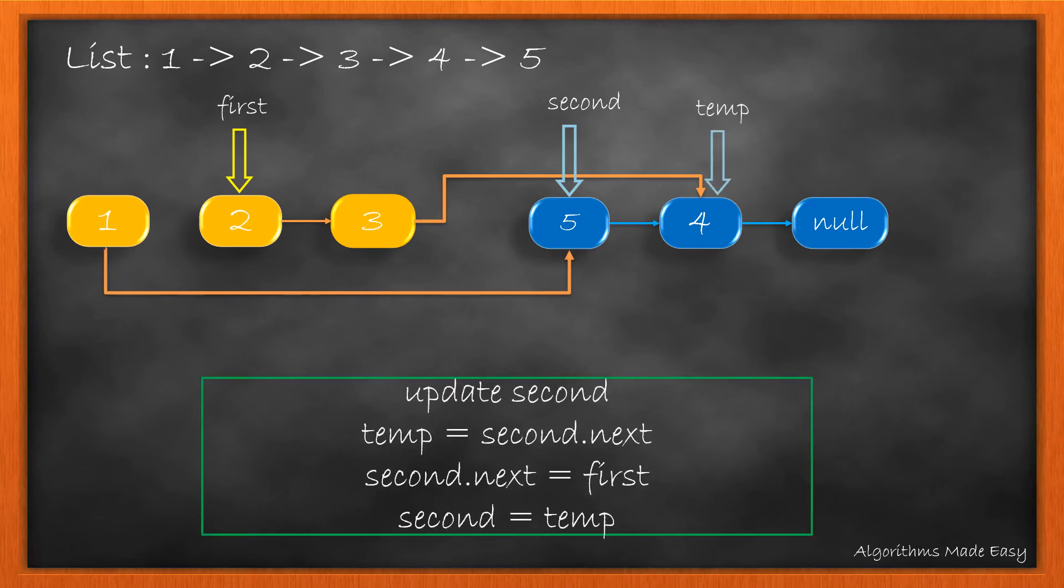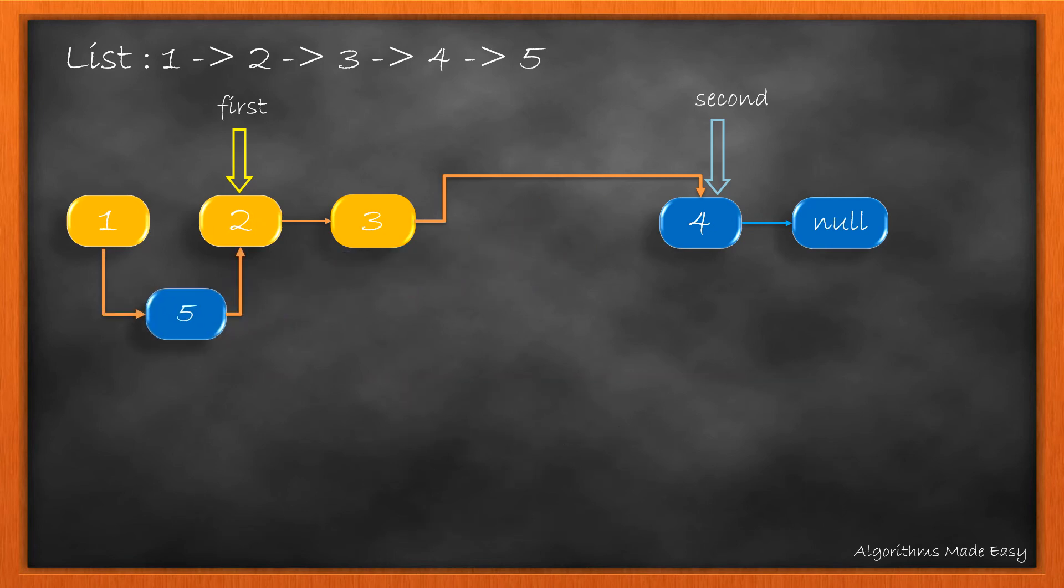Now, we need to update the next of second to point to first and shift the second node. So we perform similar steps. We store the next of second in temp, update the next pointer of second, and make the temp node as second. This is how it looks now. If we simplify the pointers, we see that we have weaved one node.